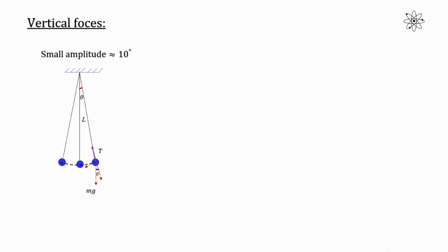At angle theta, one component is mg cos theta and the other is mg sin theta. You can see that the tension and mg cos theta act opposite to each other, and these forces are responsible for providing the centripetal force. Hence we can write: T minus mg cos theta equals mv² upon l. So the difference between T and mg cos theta gives the centripetal acceleration, which is responsible for changing the direction of motion of the ball.